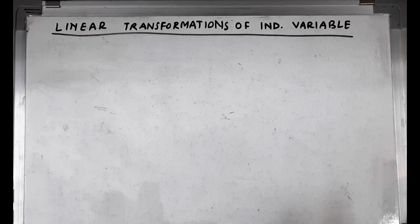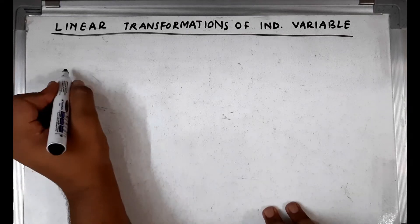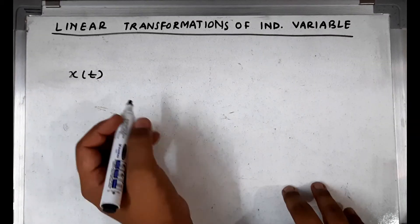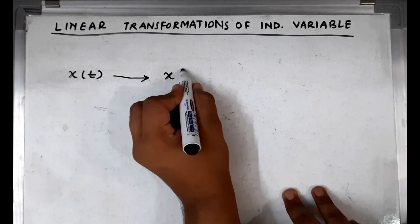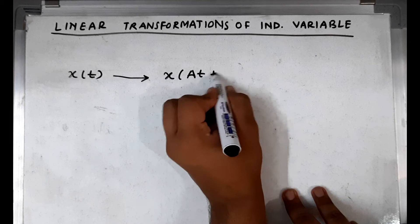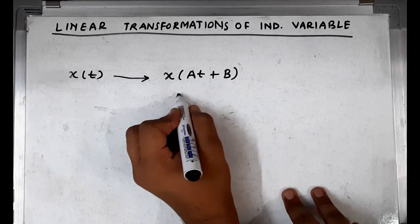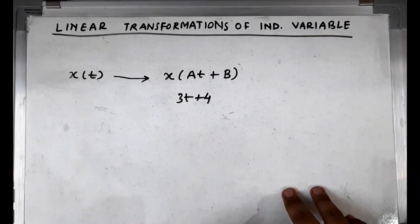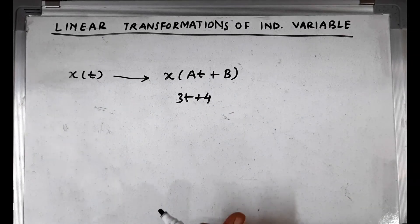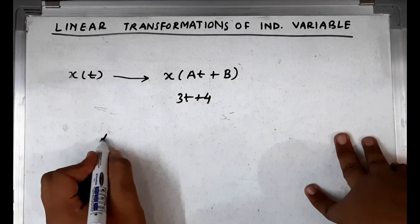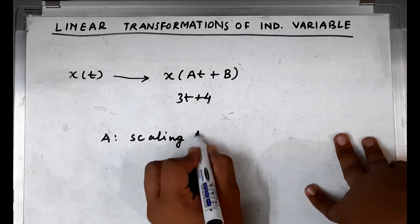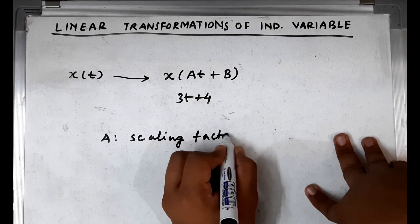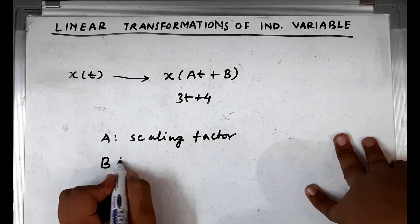Today we shall learn about the linear transformations of the independent variable. Consider a signal x. We wish to find the linear transformation of the time variable to get x of at plus b — for example, 3t plus 4. These are called linear transformations, where a is called the scaling factor and b is called the translation factor.